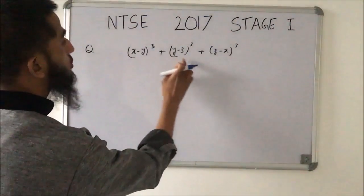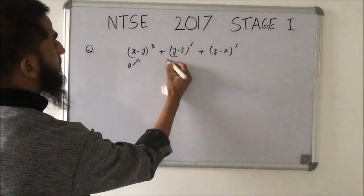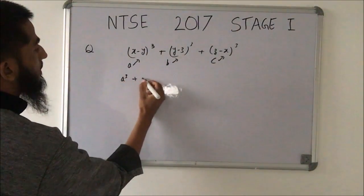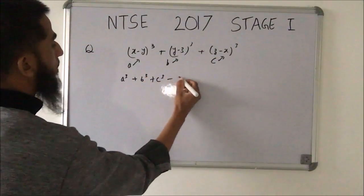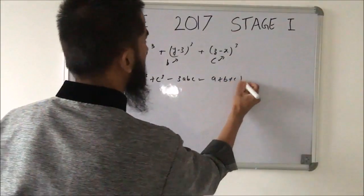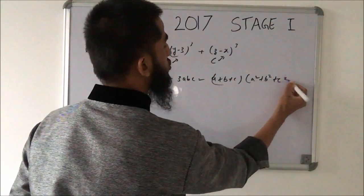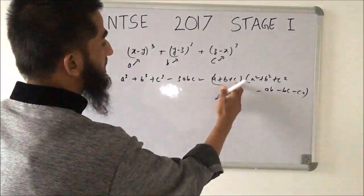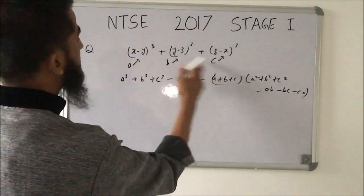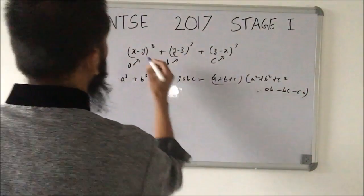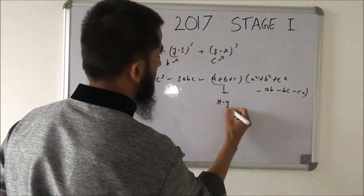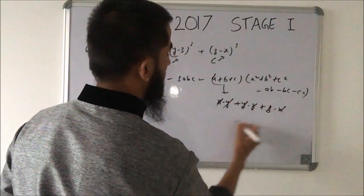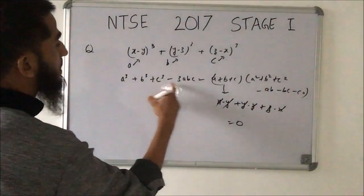In this question, I need to find the sum of the cubes of three numbers where a = x−y, b = y−z, c = z−x. So I need a³ + b³ + c³. The key formula is a³ + b³ + c³ − 3abc = (a + b + c)(a² + b² + c² − ab − bc − ca). Since a + b + c = (x−y) + (y−z) + (z−x) = 0, the expression equals 0, so a³ + b³ + c³ = 3abc.